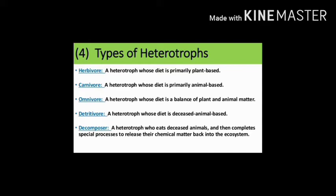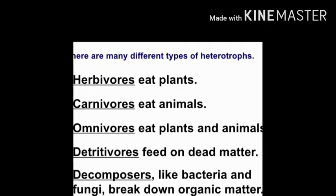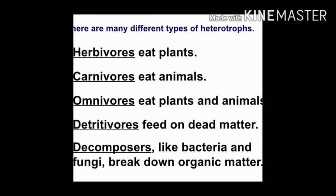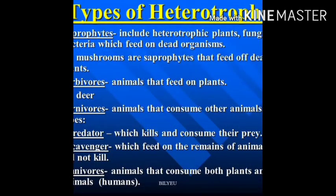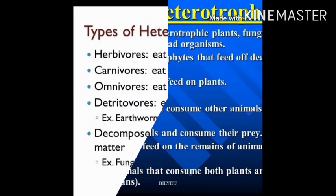Scavengers are organisms that eat dead animals or the flesh of dead animals; examples are vultures, crows, hyenas, and jackals. Insectivorous animals are insect-eating animals like frog, lizard, and spider — they all eat insects to satisfy their hunger.